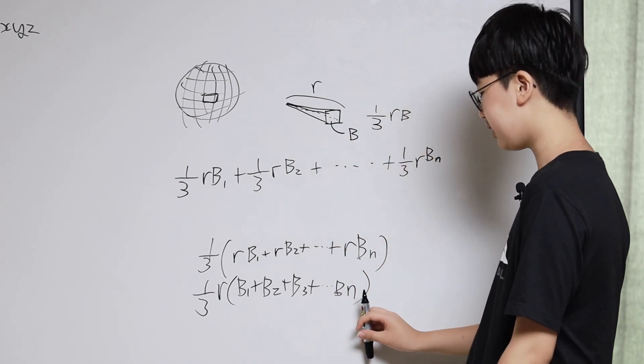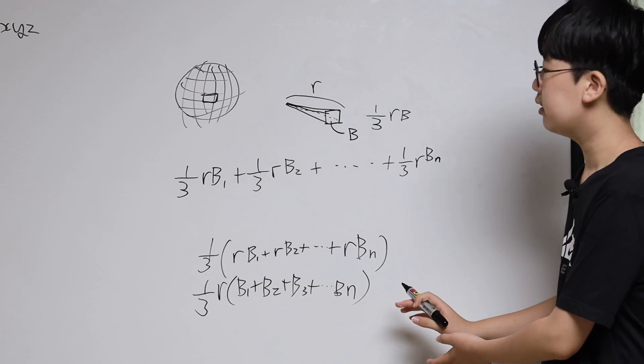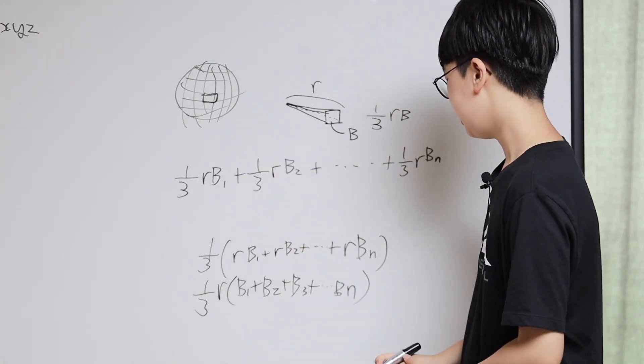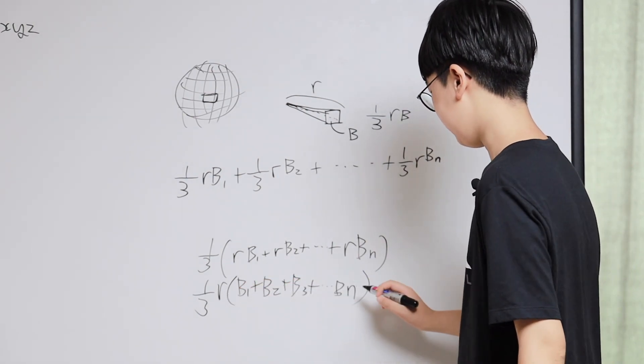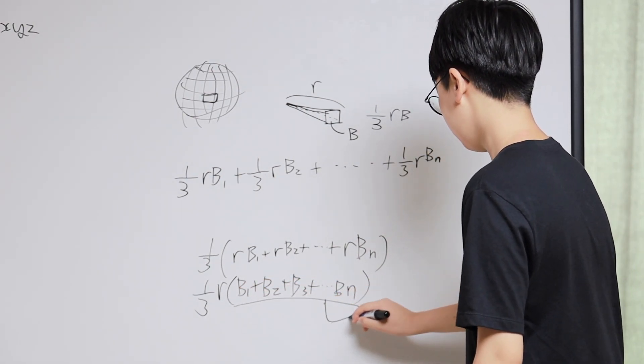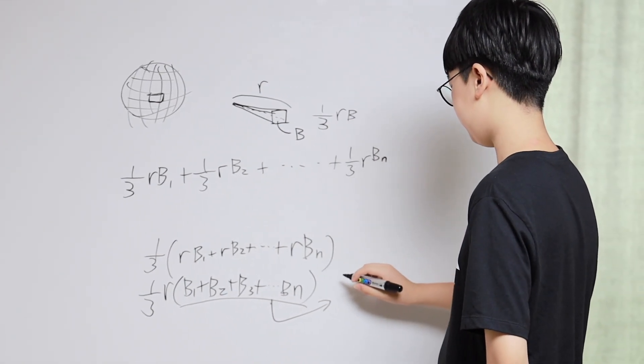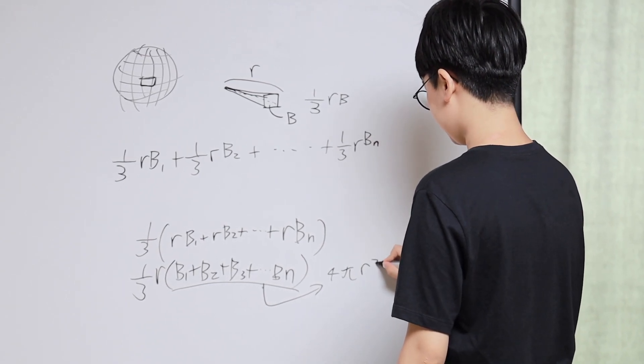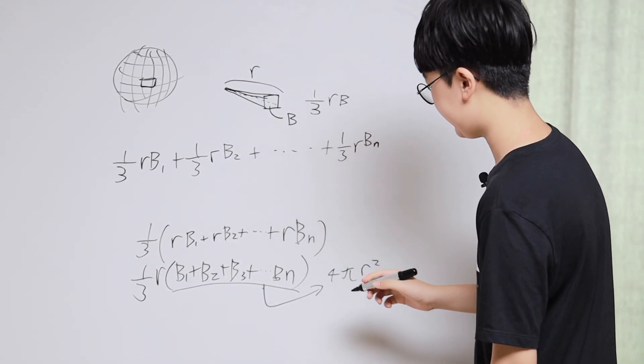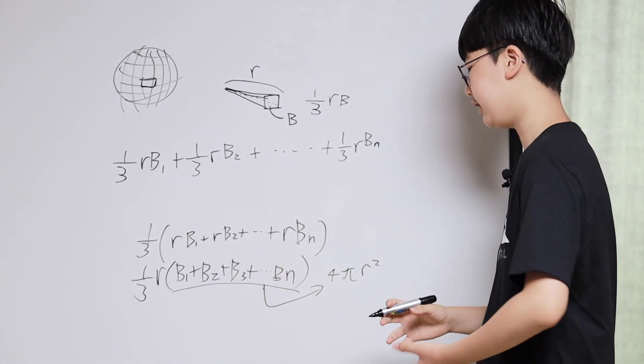What are these all combined? These are the surface area of a sphere. So these all added would be 4 pi r squared, because it's the surface area of a sphere.